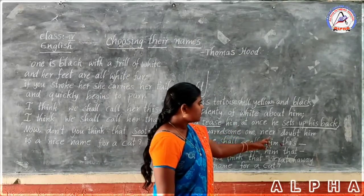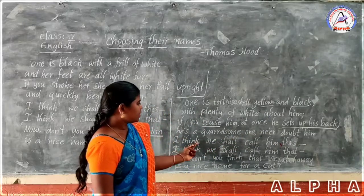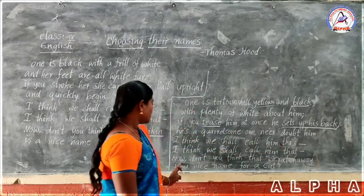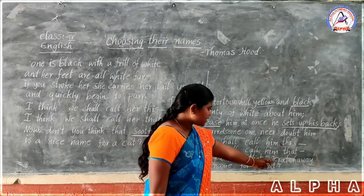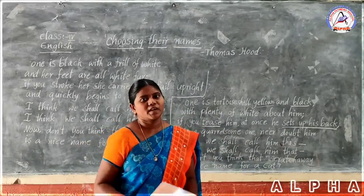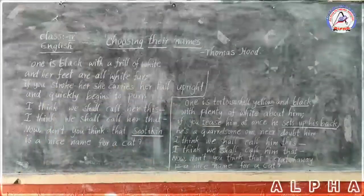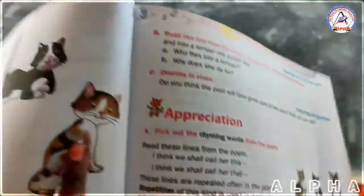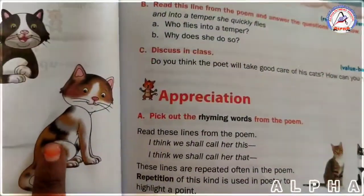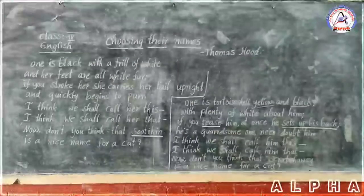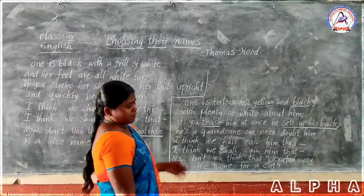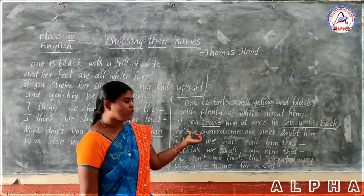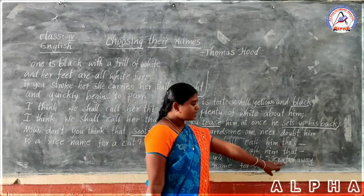He will quarrel with someone who disturbs him. 'I think we shall call him Scratch Away.' Don't you think that Scratch Away is a nice name for a cat? This is the third cat — yellow and black color. If you tease this cat, he gets angry quickly and scratches that person. So the poet chooses the cat's name Scratch Away.